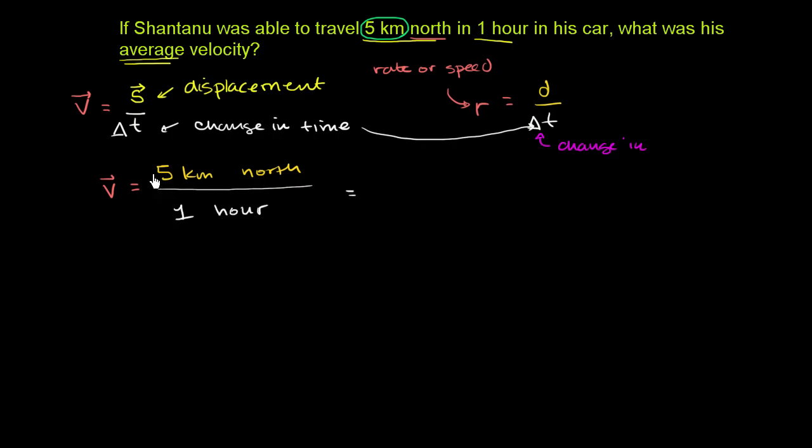So this is equal to, if you just look at the numerical part of it, it is 5 over 1. 5 over 1 kilometers. And you can treat the units the same way you would treat the quantities in a fraction. 5 over 1 kilometers per hour and then to the north. Or you could say this is the same thing as 5 kilometers per hour north.